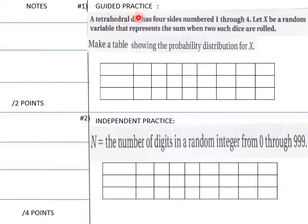Let me go into our first guided practice. A tetrahedral die has four sides numbered one through four. Let X be a random variable that represents the sum when two dice are rolled. Students, here the number of digits in a random integer from zero through 99.